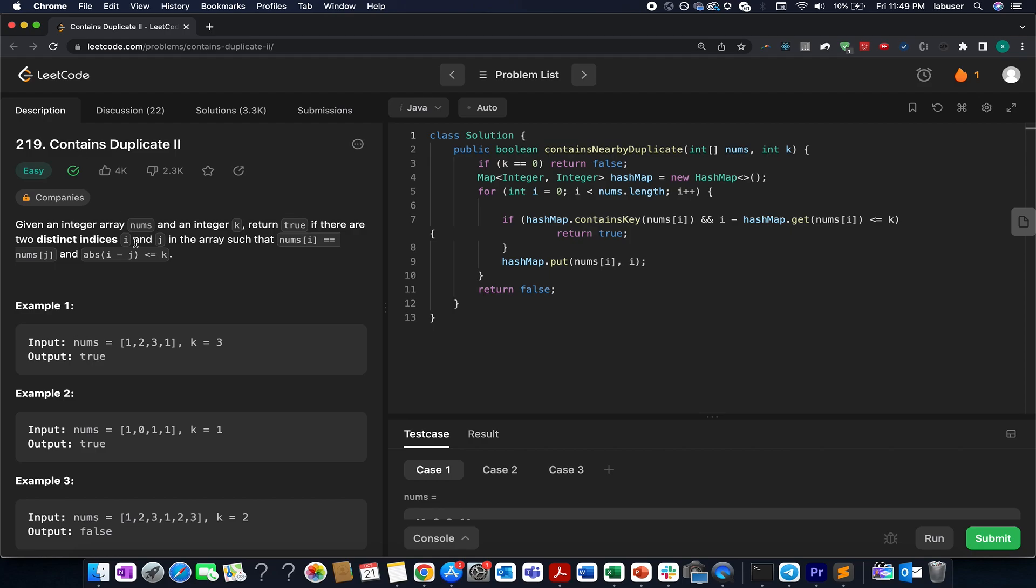The problem says you are given an array of integers and an integer value k. You need to check whether there exist two distinct indices i and j in this array such that both elements at the ith and jth index hold the same value and the distance between i and j is less than or equal to k. If both these conditions are met, we return true, otherwise we return false.